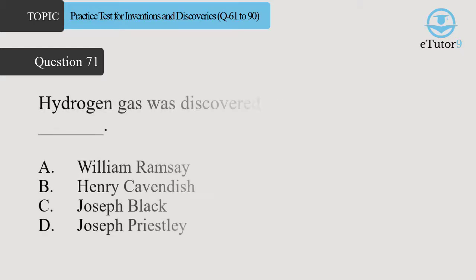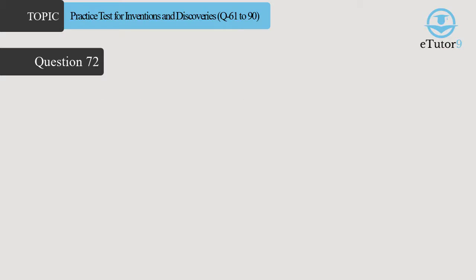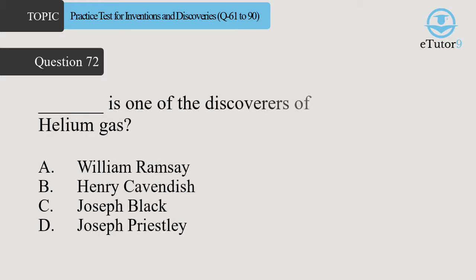Question 71. Hydrogen gas was discovered by Dash? Answer is D. Henry Cavendish. Question 72. Dash is one of the discoverers of helium gas? Answer is A. William Ramsay.